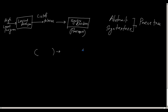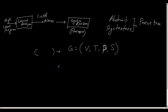Let me reiterate. A grammar is nothing but a four-tuple consisting of a set of non-terminals, a set of terminals, a set of productions or rules, and what we call the starting non-terminal. The abstract syntax tree is a tree data structure which uses these four things.